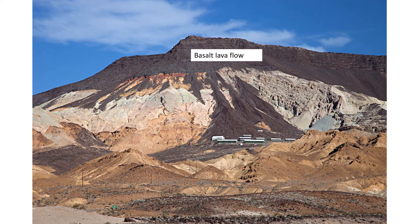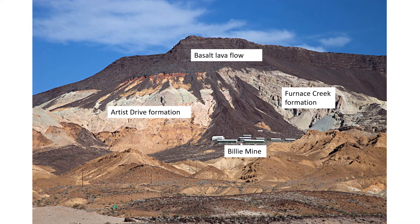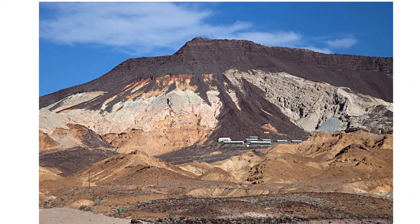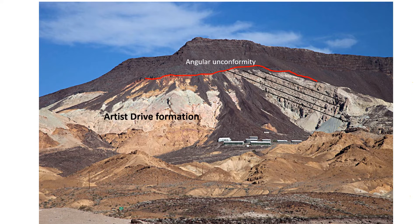Here's a basalt lava flow seen on the way to Dante's View. Also in this picture you can see the Furnace Creek Formation, which formed from lake deposits and contains borate minerals. The Billy Mine, just outside the park boundary, mined borax and ulexite from the Furnace Creek Formation. The colorful Artist Drive Formation can be found to the left. This is a great photo for geology fans because it also shows an angular unconformity — this red contact below the lava flow. The Furnace Creek Formation formed originally as horizontal layers on a lake bed, but here they have been tilted, uplifted, and then the top became an erosional surface on which the lava flow was later deposited — an angular unconformity. But there has to be a fault between the Furnace Creek Formation and the Artist Drive Formation, but we can't see it — it's covered up by those black rocks.